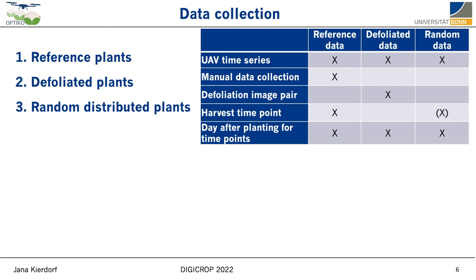Besides image time series, we provide manually collected data such as number of leaves, plant and head size, etc., for defined plots in the field. Those plots can be seen in the lower left autophoto, and we call the plants in those plots reference plants. We provide the specific harvest point for each plant and information about days after planting for every point in time.